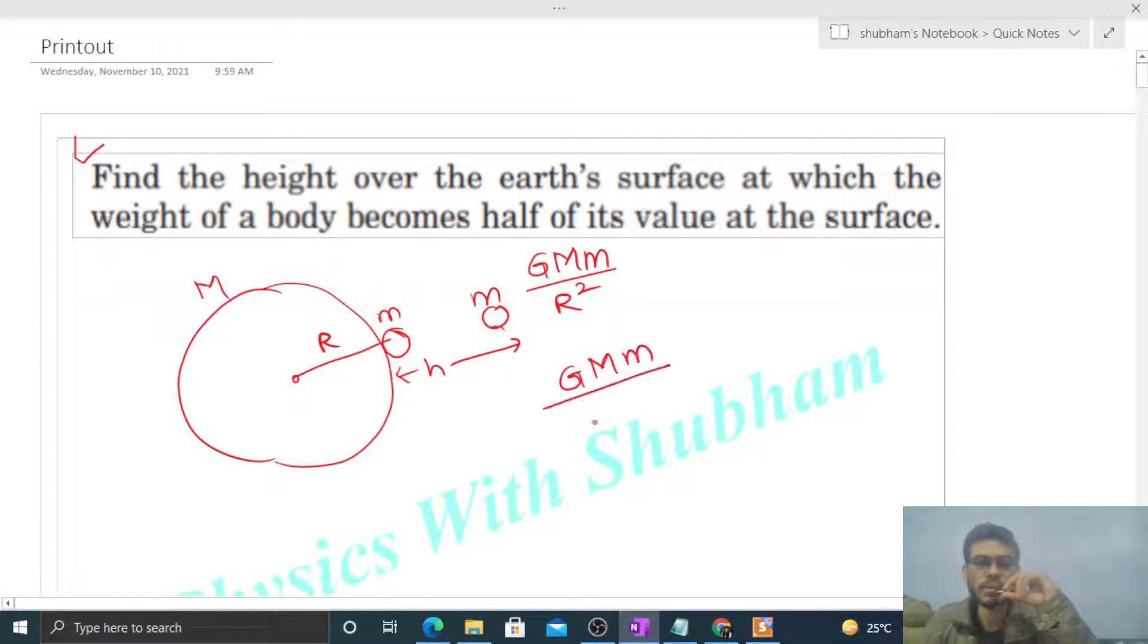So the force at height h should be equal to half of the force at earth surface. Capital G capital M small m divided by r square.